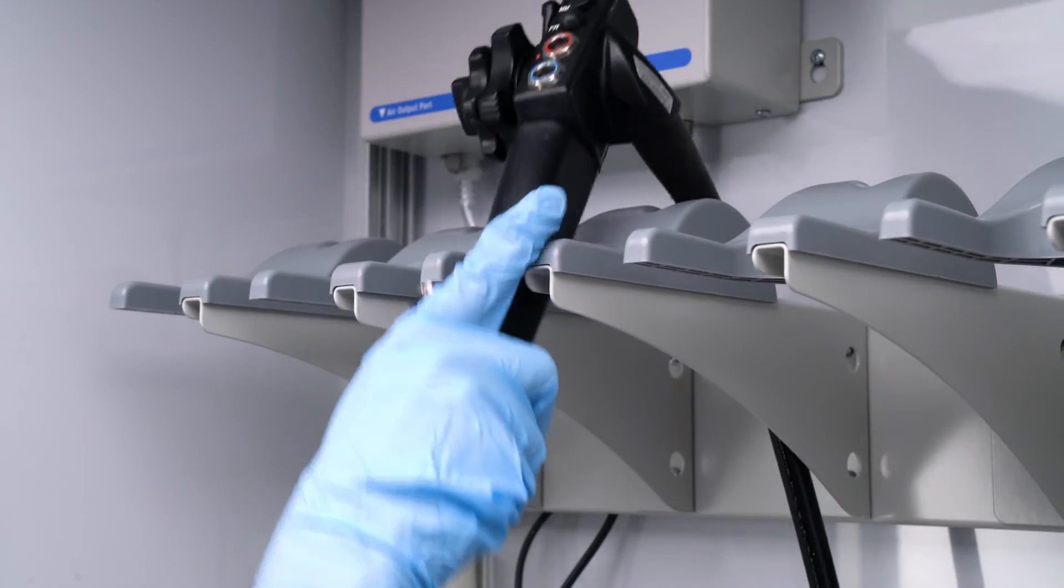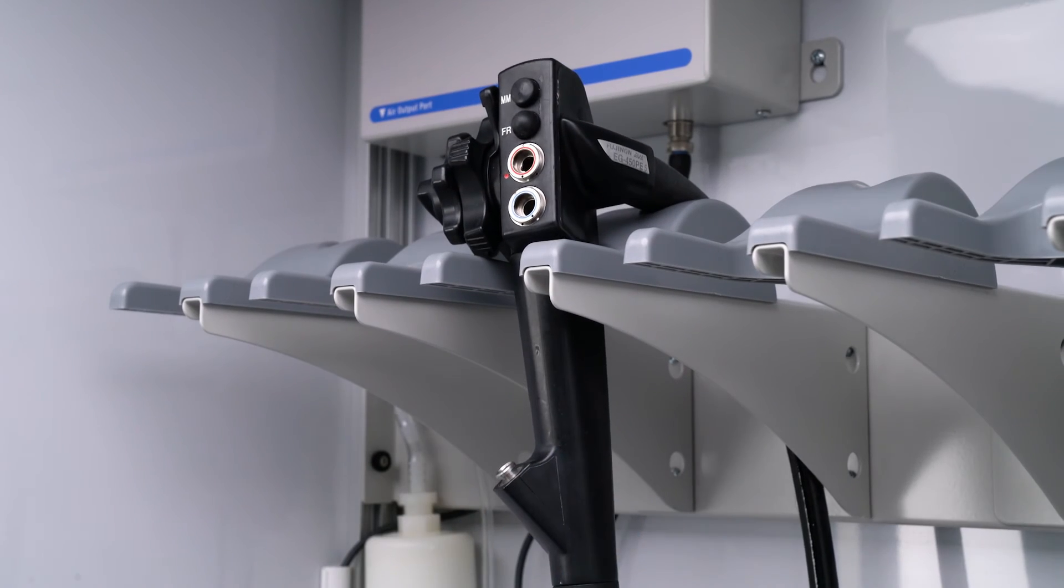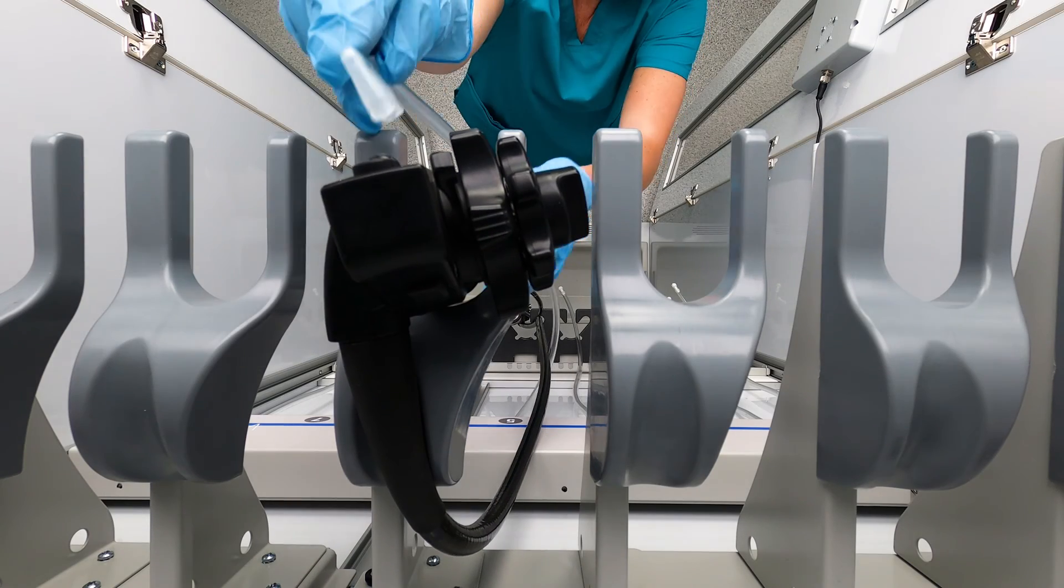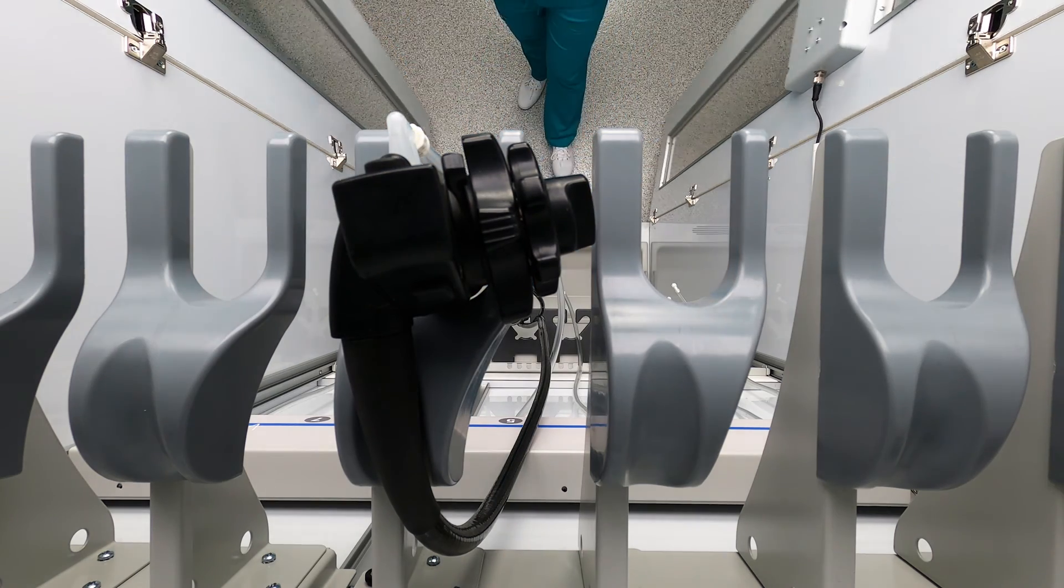The cord and tube management system keeps endoscopes organized, secure, vertically stored, and elevated away from the drip tray and other surfaces.